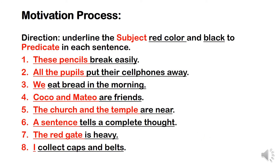We're going to present our motivation activity. Remember, the motivation process is about enhancing or boosting the mind. Directions: you have to underline the subject in red color and the predicate in black in eight sentences. For example, 'these pencils break easily' — these pencils is our subject, underlined with a red pen, and break easily is our predicate, underlined with a black color.